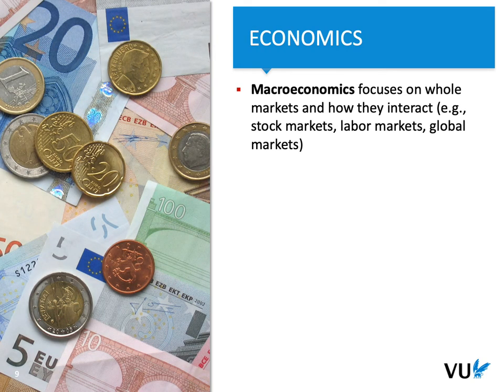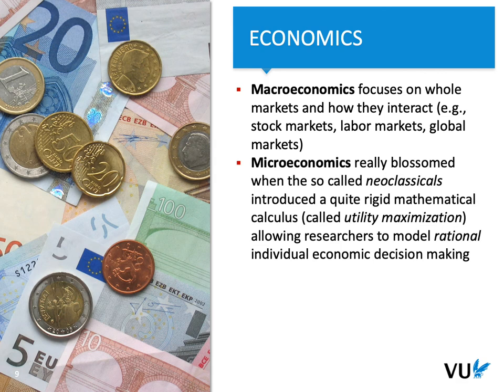In economics we distinguish between macroeconomics, which focuses on the market as a whole and how elements of the market interact with each other — for instance, relationships between stock markets, labour markets, or global markets — and microeconomics, which blossomed when more advanced mathematical analysis became available to researchers. That enabled researchers to describe consumer behaviour and decision making in a more formal way, and helped them create a model of rational decision making, or rational individual economic decision making.